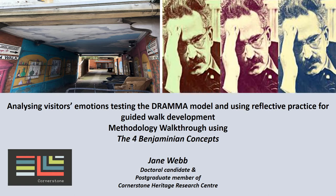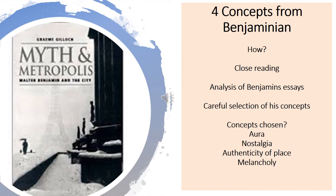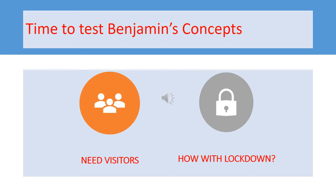Analyzing visitors' emotions, testing the DRAM model and using reflective practice for guided walk development. Methodology walkthrough using the four Benjaminian concepts by Jane Webb. How did I come up with the four concepts from Benjamin? It took some close reading of his books, analysis of his essays, then careful selection from his many concepts to develop my own chosen four: aura, nostalgia, authenticity of place, and melancholy.